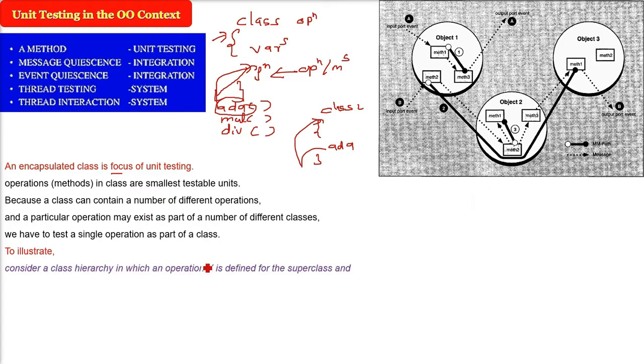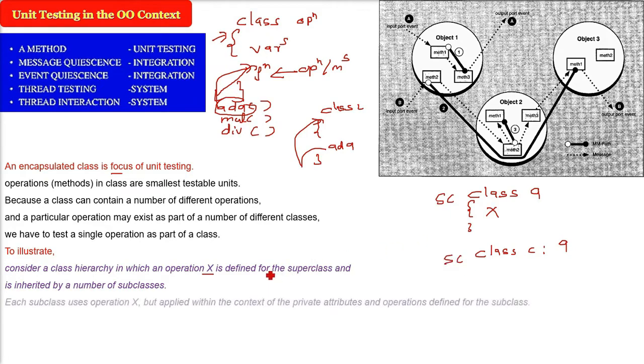For example, we have an operation x and this is in superclass, say superclass is just a class. So we have a function x here. Now we have multiple subclasses. So this function x may be inherited by class c, which is inheriting class a. So all content of class a will come to class c.